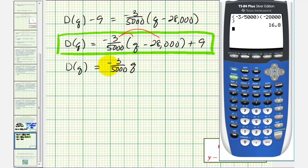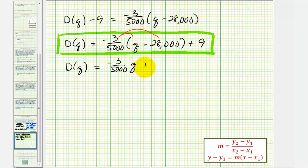So we have positive 84 fifths plus 9 over 1. Our common denominator here is 5. We'll multiply 9 over 1 by 5 over 5.